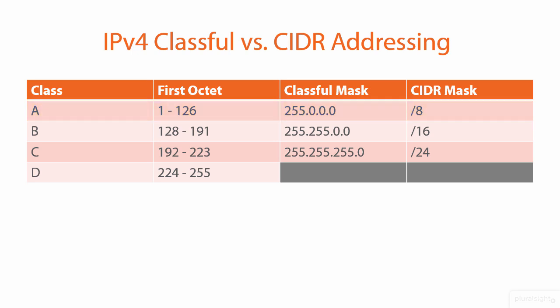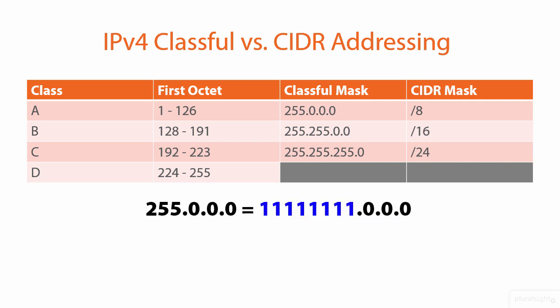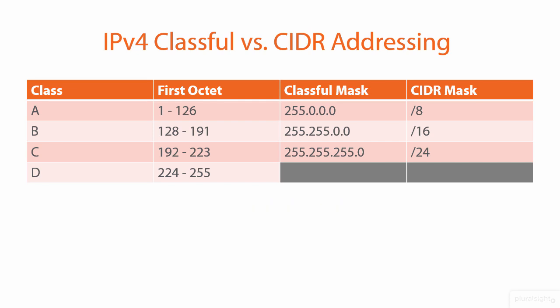By the way, 8 binary ones translates to decimal 255. You can think of the mask very much like a real mask — like a bandana covering half your face. That's how I envision it: when you overlay a mask on an IP address, you're serving to mask or separate two parts of the address — the network and the host portion.